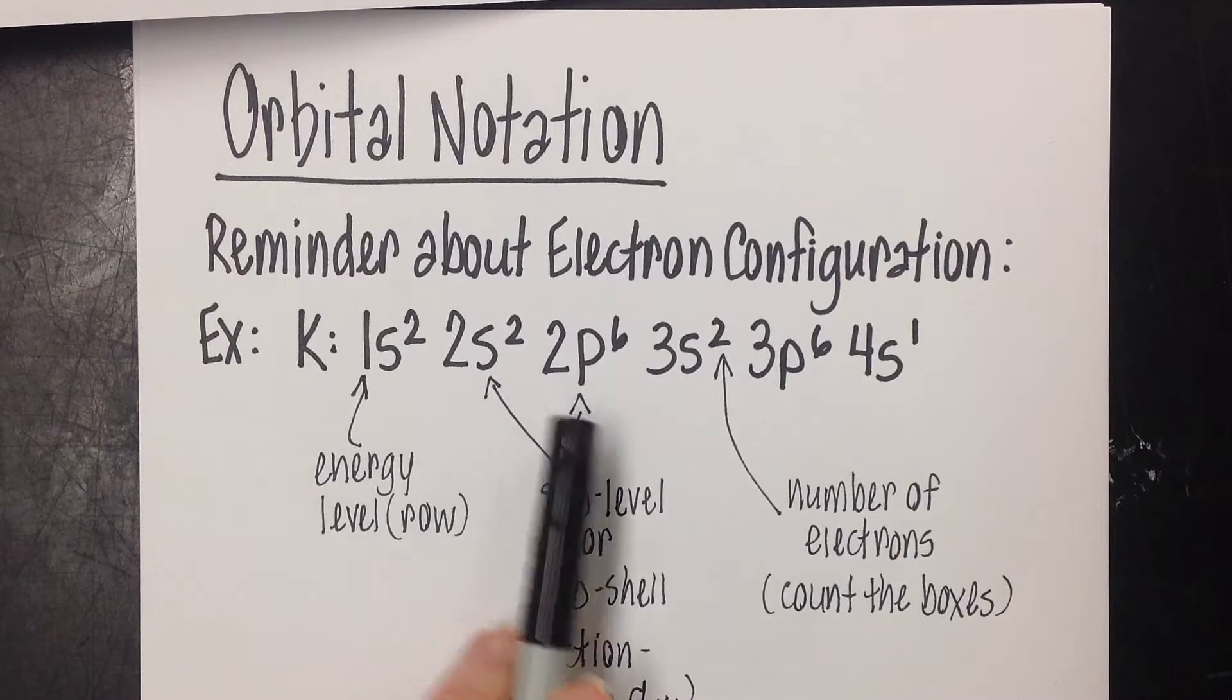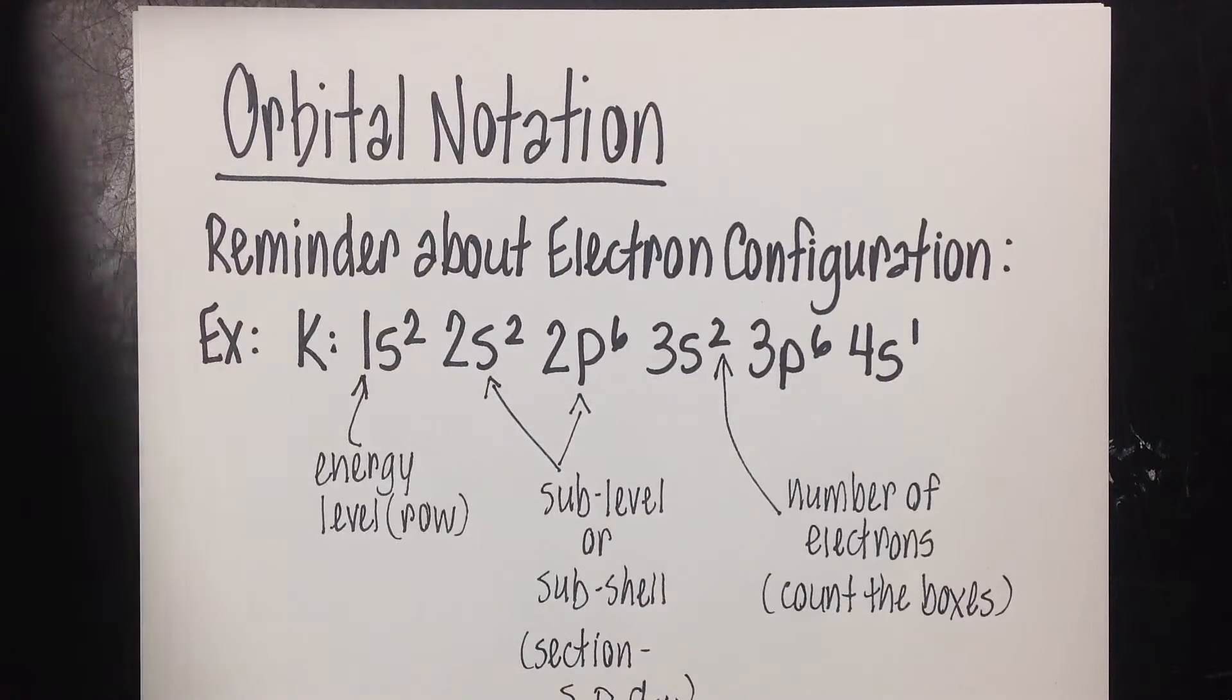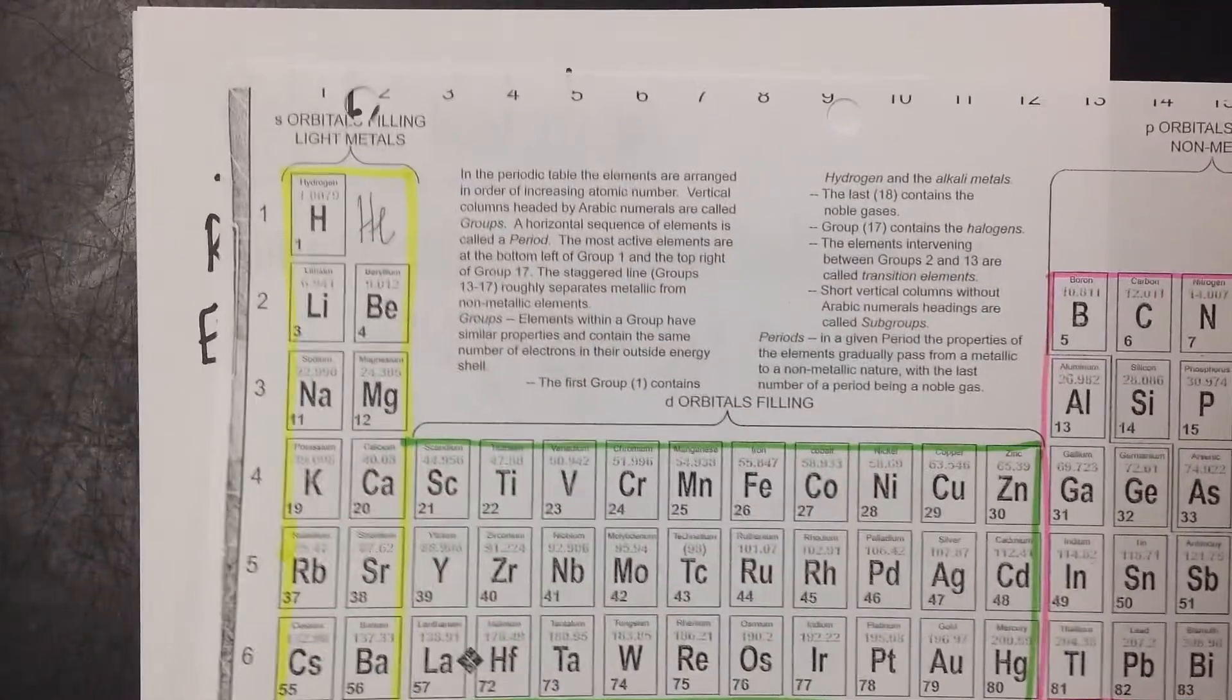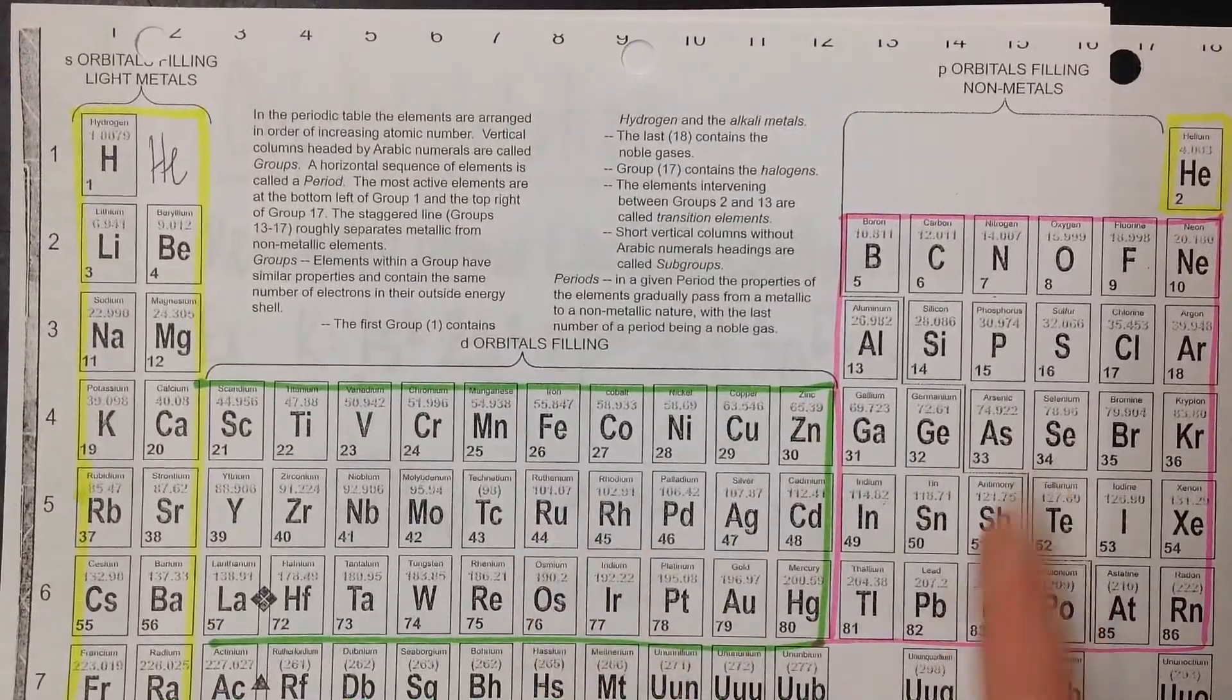The letters that you see, the Ss, the Ps, and in some cases Ds—we don't have a D on this one—that is our sublevel. You may hear that called a subshell. And we get that from the section of the periodic table that we're looking at, whether you're in the S block, the D block, or the P block.